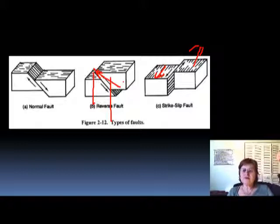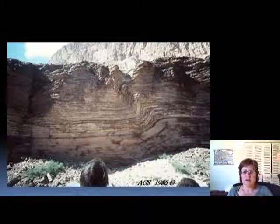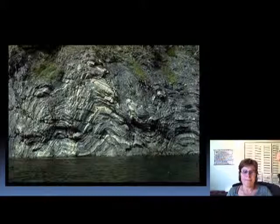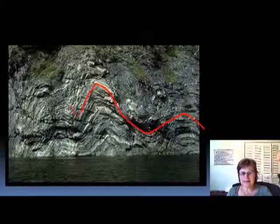Now we're going to have a bunch of slides showing different structural elements — I want you to identify what each one is. Here's the first one. Yeah, it's just a simple bend like a monocline right here. How about this one? This here is a low anticline-syncline-anticline-syncline-anticline — a fold. This happened deep down where the temperature is high and the rocks are ductile.